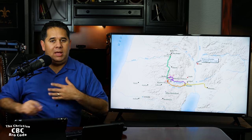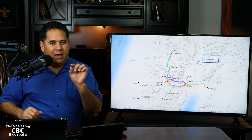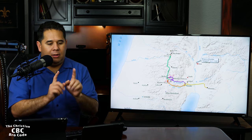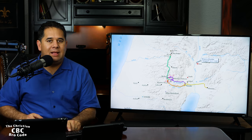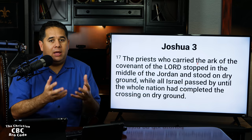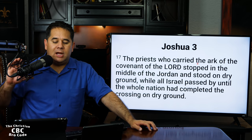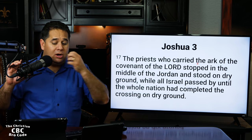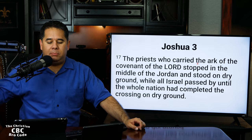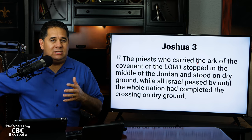Most significantly for me — and I'll come back to this when we talk about the 12 memorial stones — is the depth of the water. That's an important clue, and it's not coincidental that the Bible included that detail. Now verse 17: 'The priests who carried the Ark of the Covenant of the Lord stopped in the middle of the Jordan and stood on dry ground while all Israel passed by until the whole nation had completed the crossing on dry ground.' This is almost like a flashback to the crossing of the Red Sea.